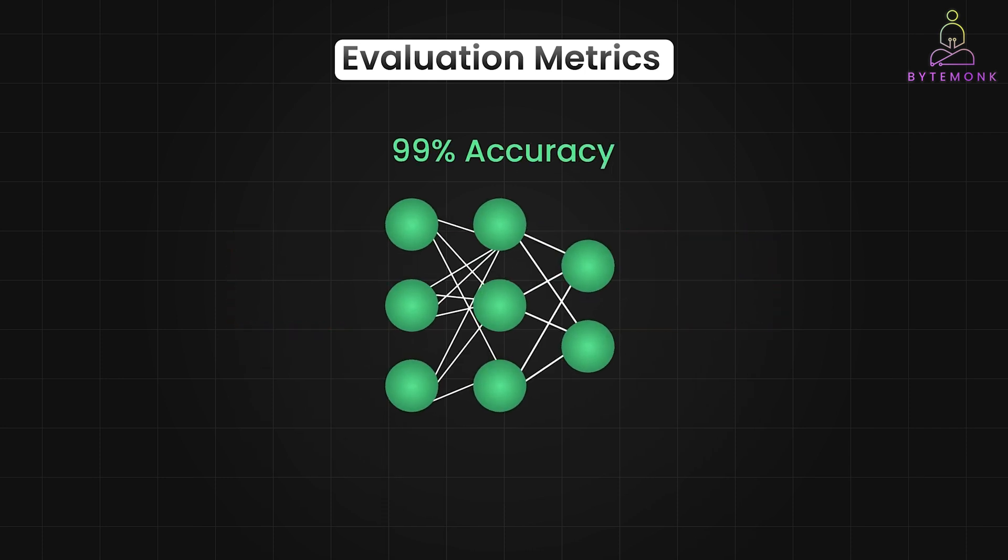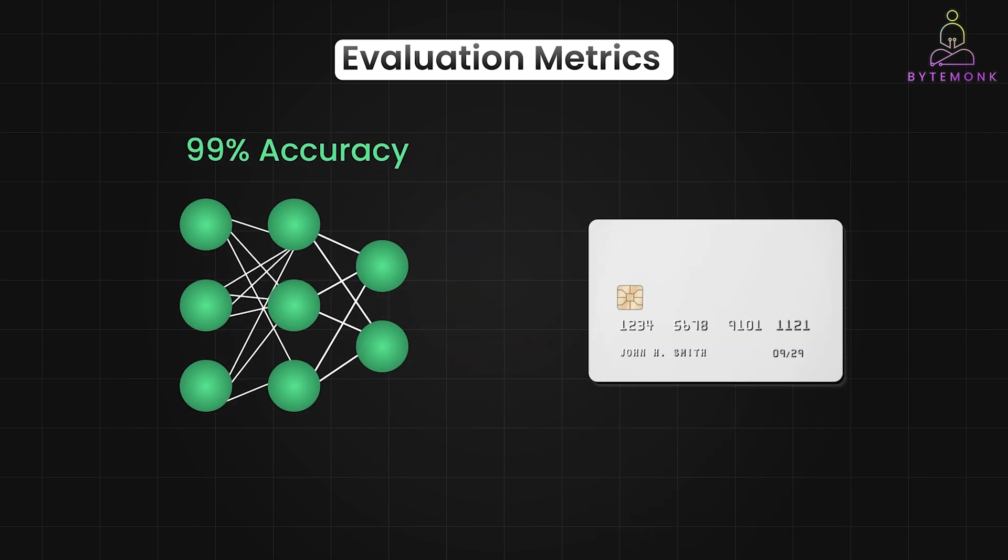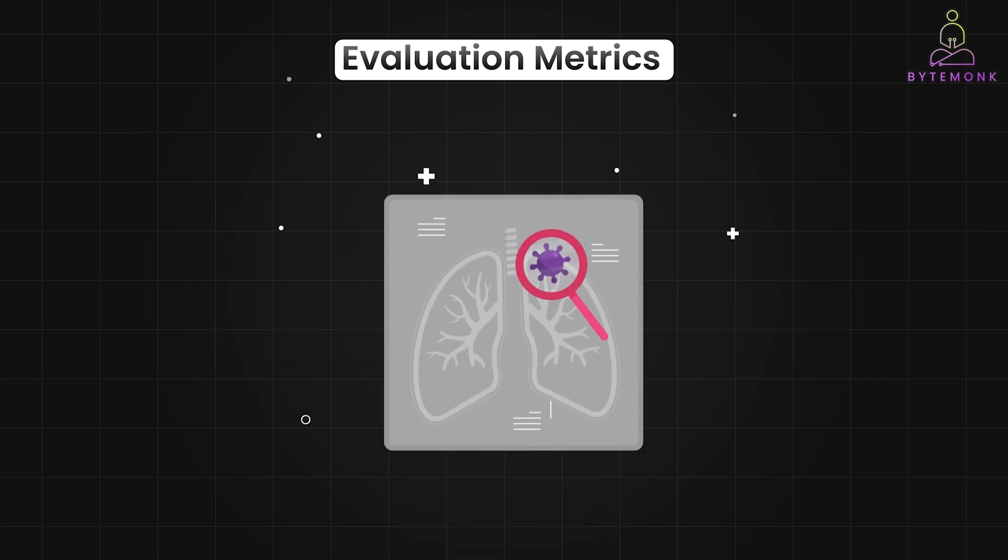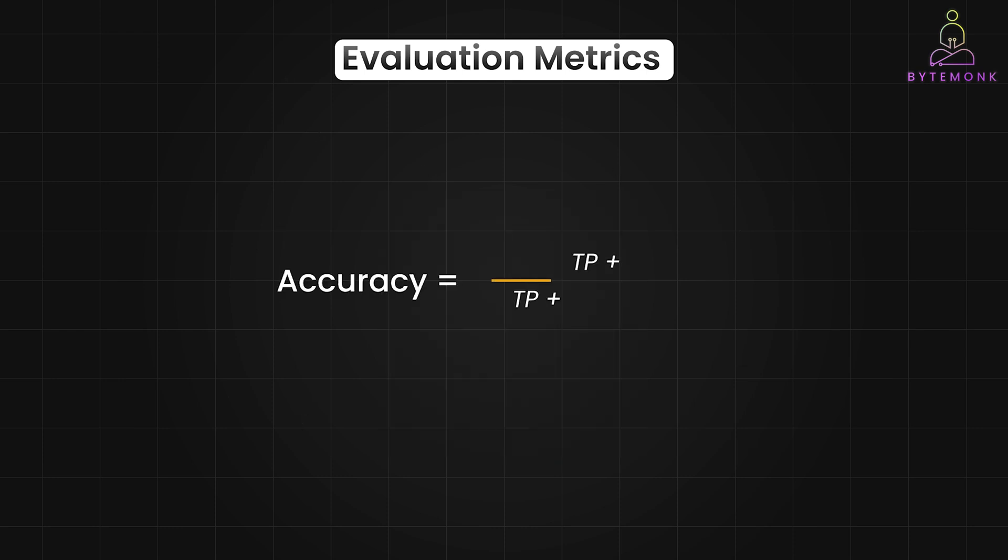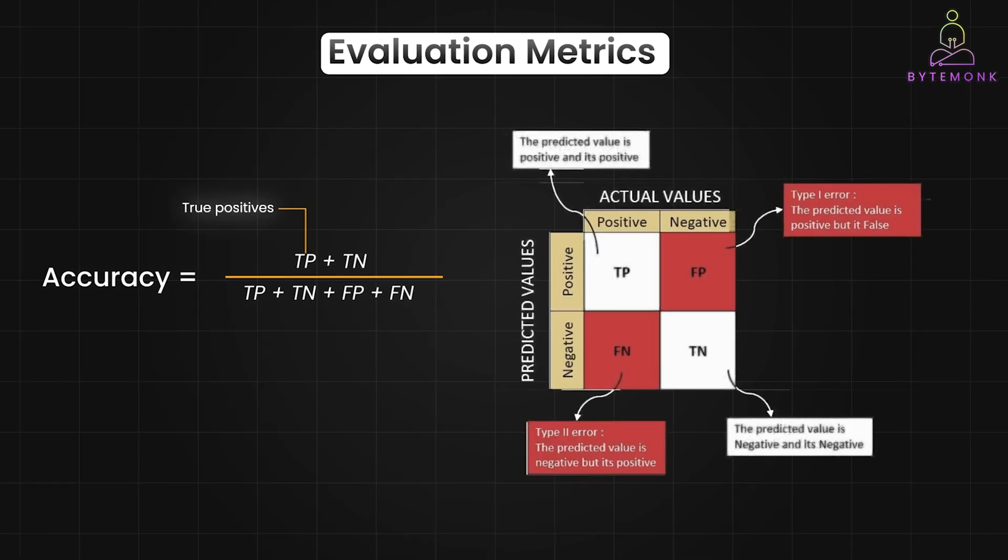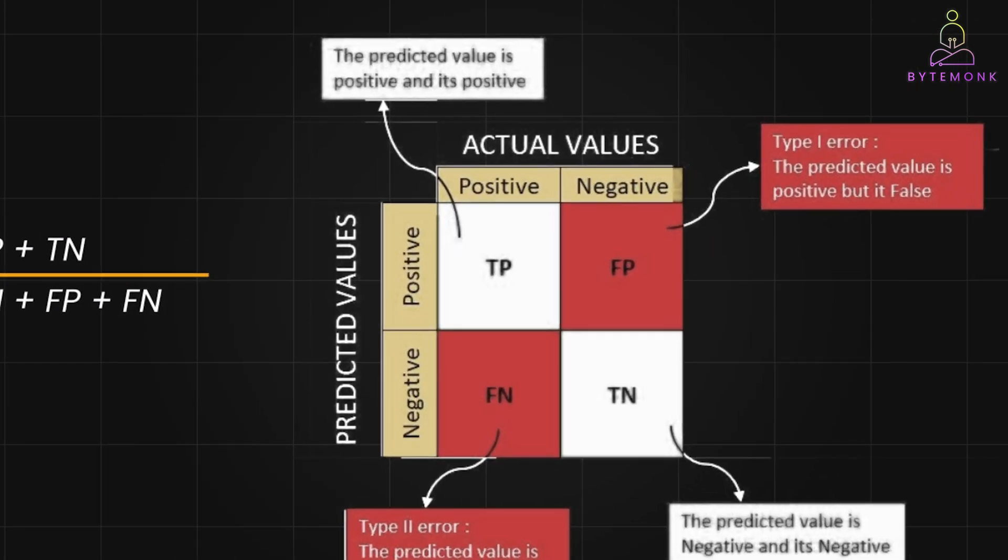Imagine a model with 99% accuracy in predicting credit card fraud. Sounds great, right? But what if the 1% of error means missing thousands of fraudulent transactions? Or consider a cancer screening test with 98% accuracy. That remaining 2% could be life-threatening misdiagnosis. That is why we have to break down the accuracy formula even further. TP or true positives occur when your system predicts that an observation belongs to a class, and it actually does belong to that class. For example, your model correctly flags an email as spam.